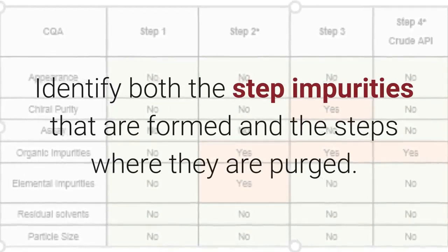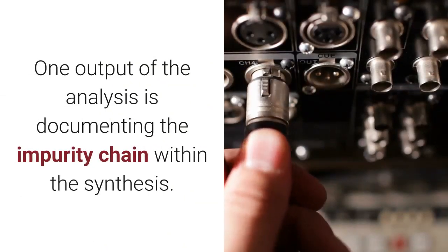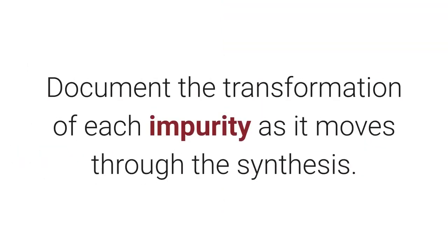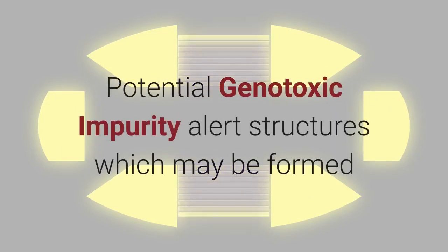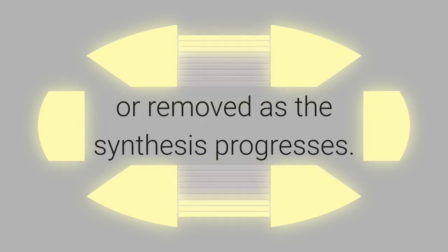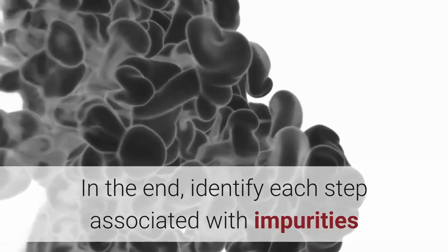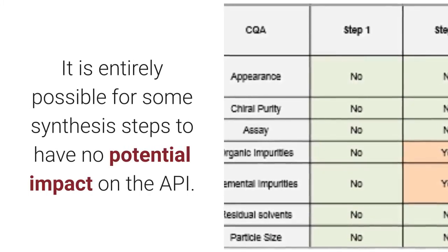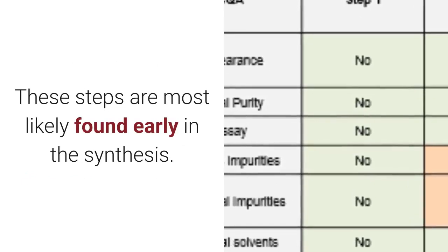Identify both the steps where impurities are formed and the steps where they are purged. One output of the analysis is documenting the impurity chain within the synthesis — document the transformation of each impurity as it moves through the synthesis. The transformations should be understood with respect to potential genotoxic impurity alert structures, which may be formed or removed as the synthesis progresses. In the end, identify each step associated with impurities having the potential to impact the final API. It is entirely possible for some synthesis steps to have no potential impact on the API; these steps are most likely found early in the synthesis.